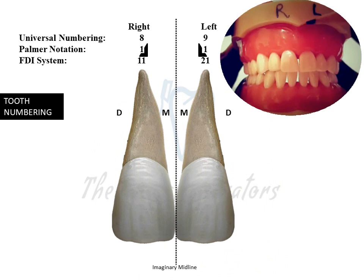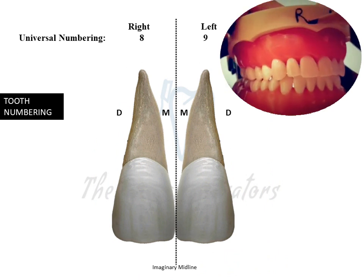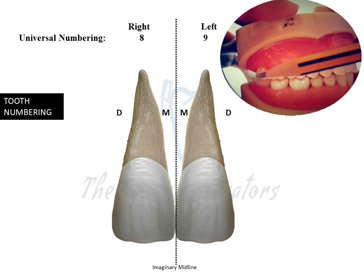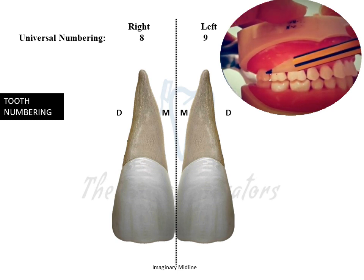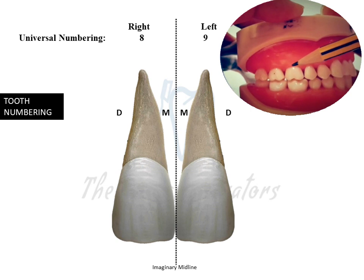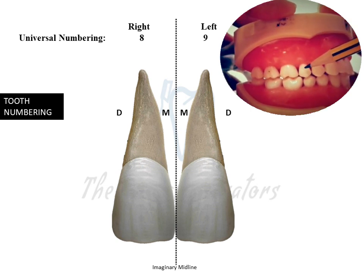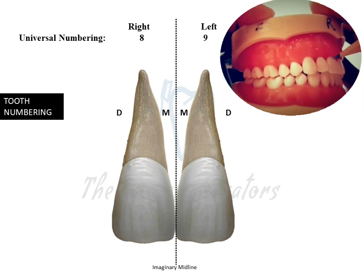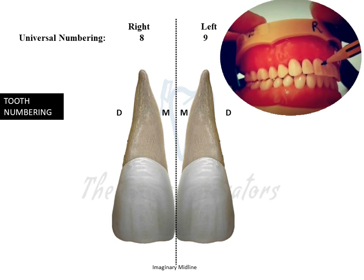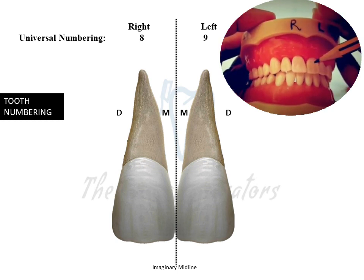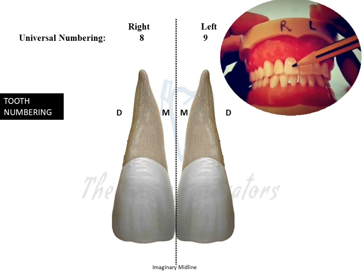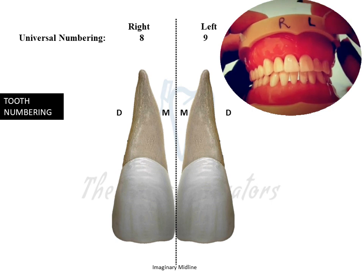In the Universal Numbering System, we start counting from the upper right maxillary third molar as number one, counting through: number two for the second molar, three for the first molar, four for the second premolar, five for the first premolar, six for the canine, seven for the lateral incisor, and number eight for the upper right central incisor. Number nine is for the upper left maxillary central incisor.